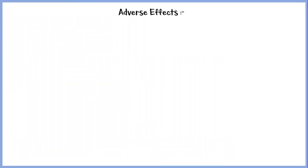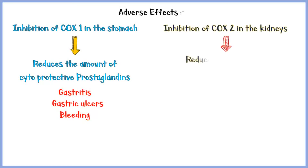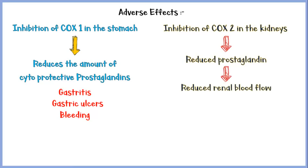Inhibition of COX-1 enzyme in the stomach will reduce the amount of cytoprotective prostaglandins, which can cause gastritis, gastric ulcers, and GI bleeding. Inhibition of COX-2 in the kidneys will reduce prostaglandin synthesis and thereby dilation of renal arteries, which ultimately results in reduced renal blood flow.